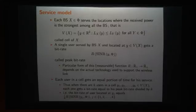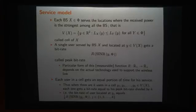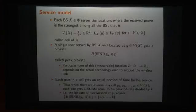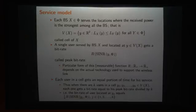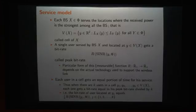For the service model, each base station X in the process phi serves locations Y which have the smallest propagation loss among all base stations — this defines the cell of base station X. A single user served by base station X at location Y gets a bit rate R, a deterministic function of the SINR, which we call the peak bit rate. We assume each user gets an equal portion of time: if there are K users at locations Y_1, ..., Y_K, each gets their peak bit rate divided by K.